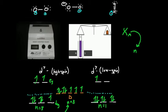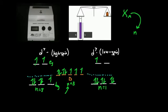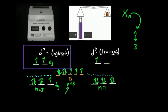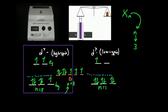Say we did an experiment: we calculate the molar susceptibility X_M, measure that, and back-calculate the number of unpaired electrons — and it turns out that number is three. In this particular experiment, I could conclude that our compound is the high spin case of that d7 metal. It's not the low spin, because if it were low spin, I would measure X_M and back-calculate n and it would be one. But it's not one, it's three, so it has to be high spin.